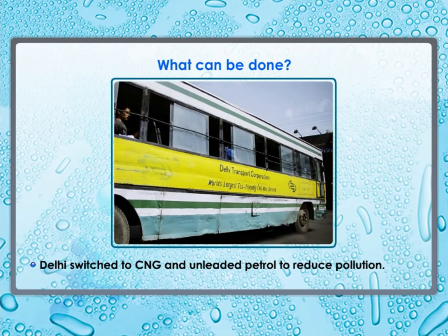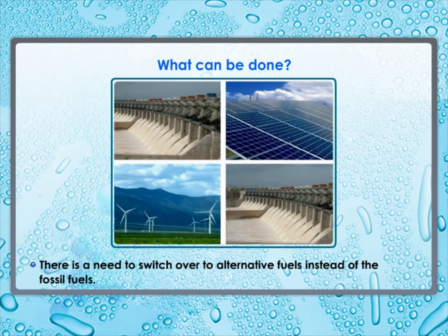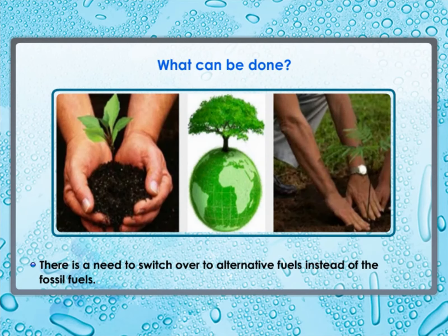There are many success stories in our fight against air pollution. A few years ago, Delhi was one of the most polluted cities in the world, being choked by fumes from automobiles running on diesel and petrol. A decision was taken to switch to fuels like CNG and unleaded petrol, resulting in cleaner air for the city. The quality of air at various locations is monitored regularly by the government. There is a need to switch to alternative fuels such as solar energy, hydropower, and wind energy. We can also plant trees and nurture the ones already present in the neighborhood.